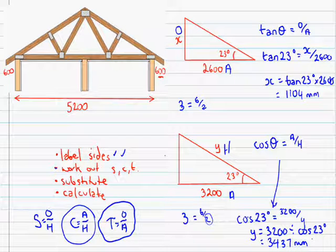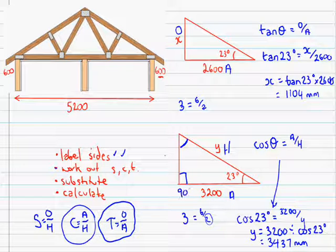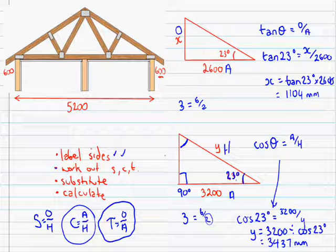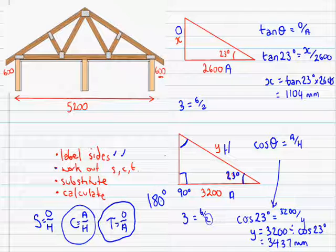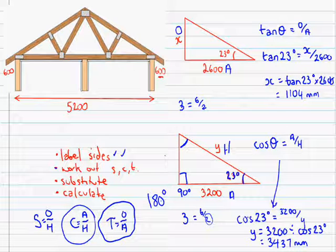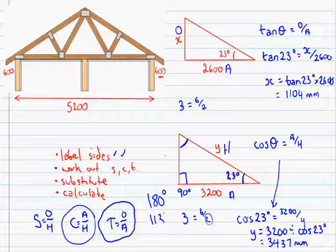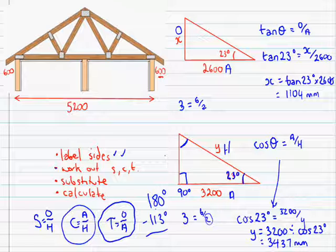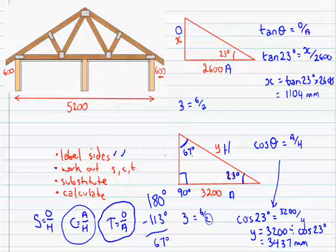The last thing which we could also do here is work out this little angle up here. This angle here is 90 degrees. This angle here is 23 degrees. Now all angles in a triangle add up to 180 degrees. So 90 plus 23 is 113. If we take that away from 180 we get the answer of 67 degrees. This angle up here is going to be 67 degrees.